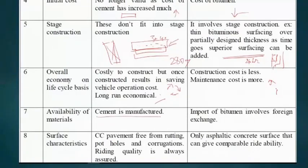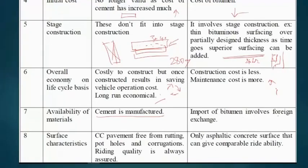Regarding material availability, rigid pavement uses locally available materials and cement can be manufactured locally. Flexible pavement depends on crude oil, and with crude oil price variations the cost varies accordingly. India does not manufacture sufficient quantity of bitumen, so it is imported, incurring import duties and dependence on foreign sources and exchange rates.